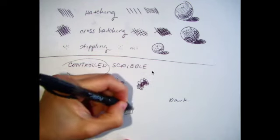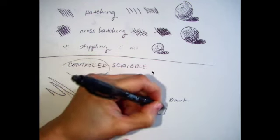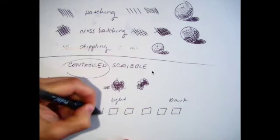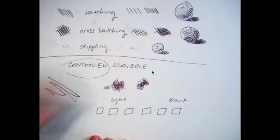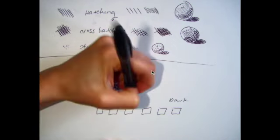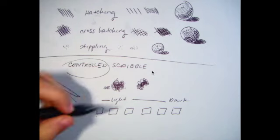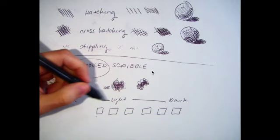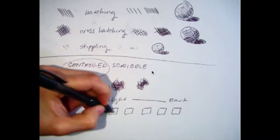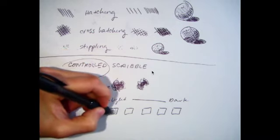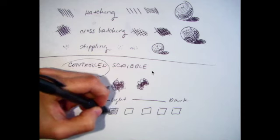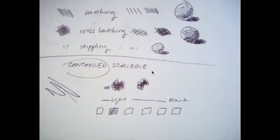Let's do one, two, three, four, five, let's do six. So assuming that this is my lightest value, that'll be my highlight, that's nothing. Go ahead and start by making very light controlled scribbled marks in your first one for your lightest value.